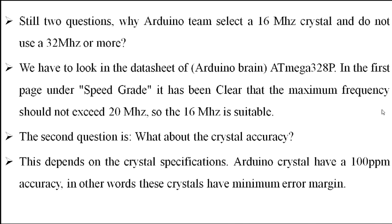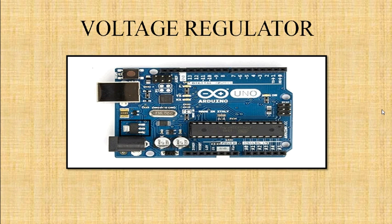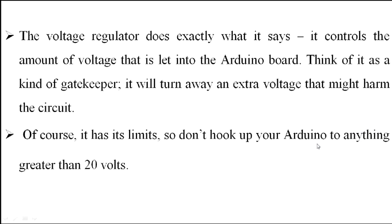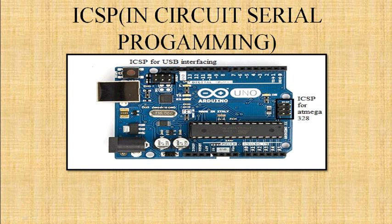The component inside this square is a voltage regulator. A voltage regulator does exactly what it means — it controls the amount of voltage that it lets into the Arduino board. It acts like a gatekeeper, turning away extra voltage that might harm the circuit. It has its limits, so don't hook up your Arduino to anything greater than 20 volts.